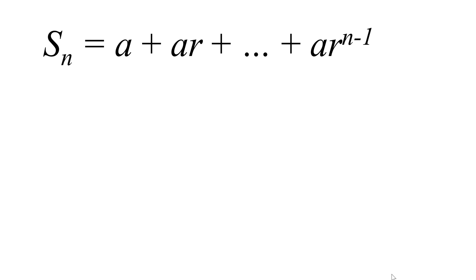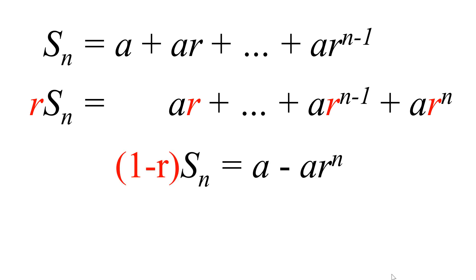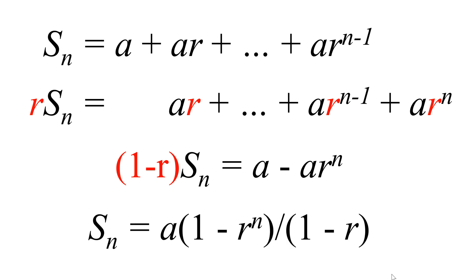To come up with the formula for Sn, we multiply both sides by r. Thus, r·Sn = ar + ar² + ... + ar^n. The next step is to subtract the second equation from the first, giving (1 − r)·Sn = a − ar^n, or Sn = a(1 − r^n) / (1 − r).